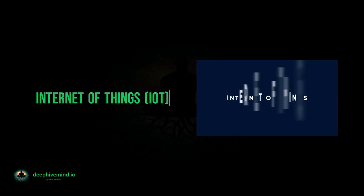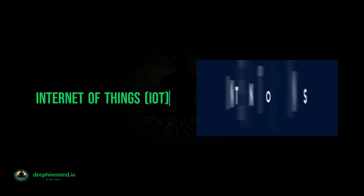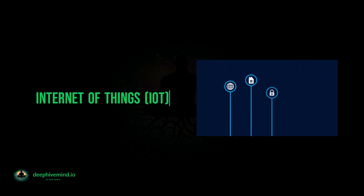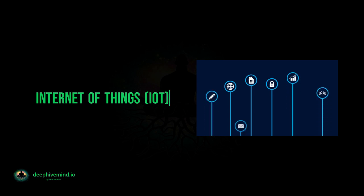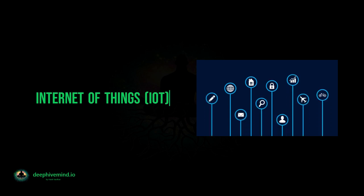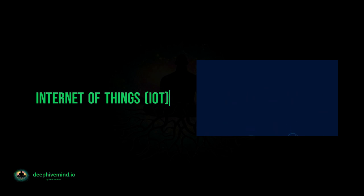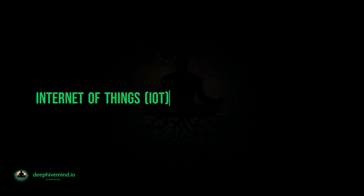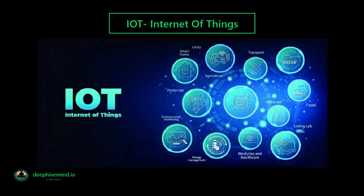IoT is a system of interrelated computing devices, mechanical and digital machines, objects, animals, or people that are provided with unique identifiers, UIDs. They have the ability to transfer data over a network without requiring human-to-human or human-to-computer interaction.